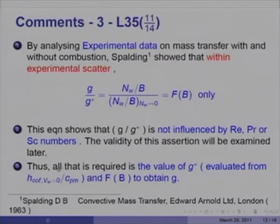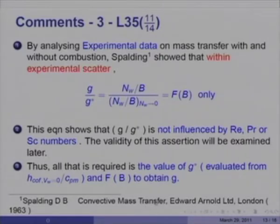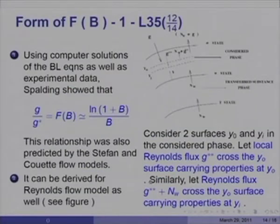Spalding showed that G over G* turns, within experimental scatter of about plus or minus 10 to 15 percent, to be a function of B only — a remarkable result that this ratio should not be influenced by any other quantity other than the driving force B. It is independent of Reynolds, Prandtl, and Schmidt numbers. All that is required is the value of G* evaluated from the heat transfer coefficient at V_W equal to zero, divided by C_PM, and then multiplied by F(B) to obtain G. The book Spalding D.B., Convective Mass Transfer, published in 1963, is a pioneering and highly relevant reference.